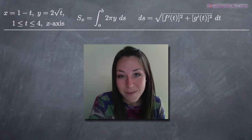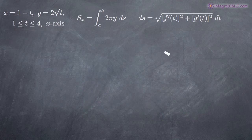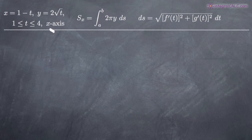Hi everyone! Welcome back to integralcalc.com. Today we're going to be talking about how to find the surface area of revolution of a parametric curve. In this particular case, we've been given the parametric curve defined by x equals one minus t and y equals two times the square root of t, and we've been asked to find the surface area generated by revolving this curve around the x-axis between t equals one and t equals four.